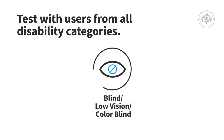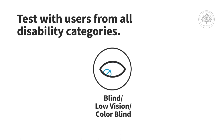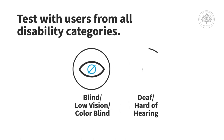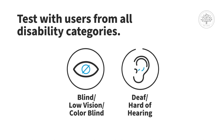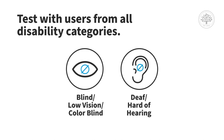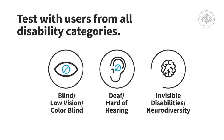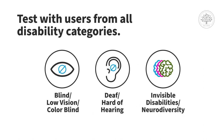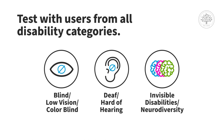There are different categories of disability that you want to include: users who are blind or have low vision, color blindness — you can use simulators online, there are some really good simulators available — deaf and hard of hearing, which relates to captioning, and make sure you cover invisible disabilities and neurodiversity in particular.